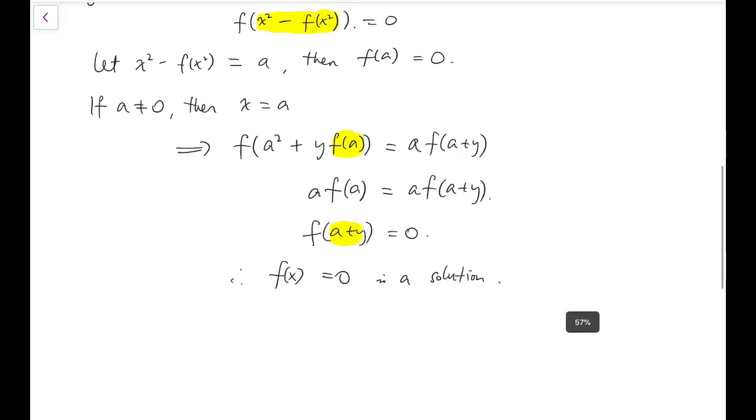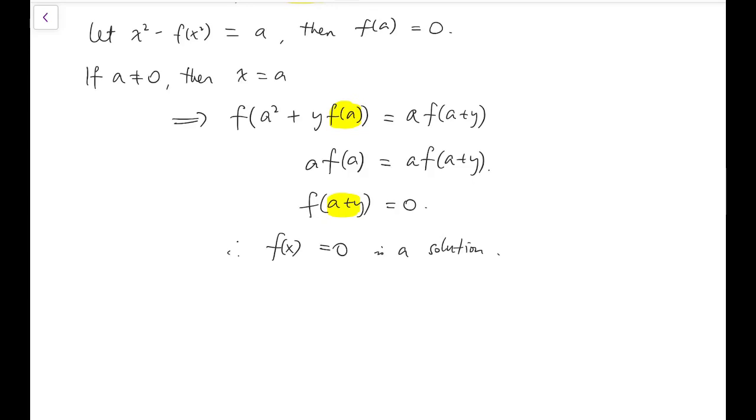Now otherwise, we've only achieved this because we have assumed that a is not equal to zero. So now if a equals zero, then f of x squared equals x squared.